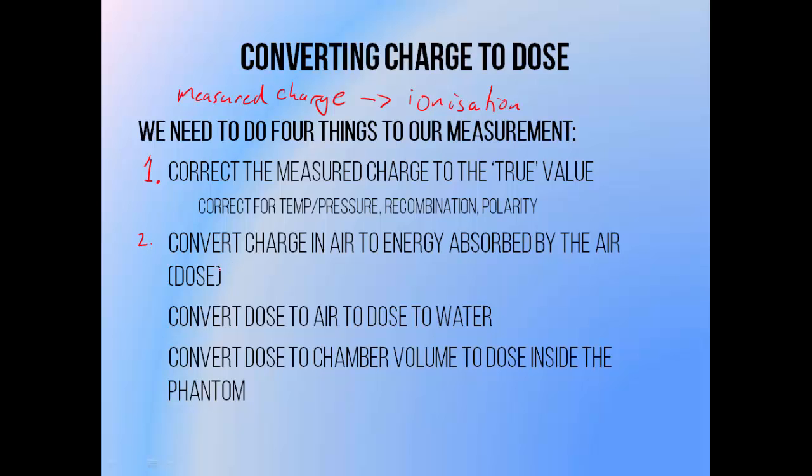We need to convert the measured charge into absorbed energy, converting ionization to dose absorbed by the air in the chamber volume. Then convert dose to air to dose to water, and assign the value obtained in the chamber volume to a point in the water phantom. Steps 3 and 4 are usually taken care of using the same operation, which I'm going to cover in more detail in the next video.